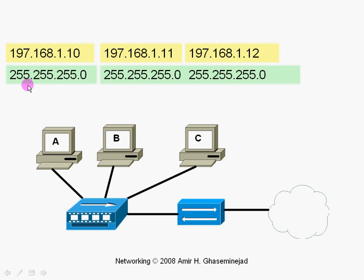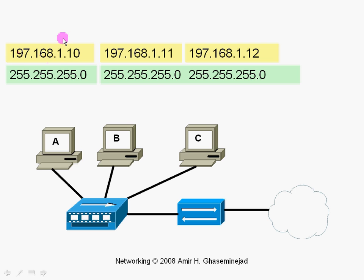The subnet mask is a set of zeros and ones that tells the computer which part of the IP address assigned to it is the network address and which part is the host address. Computer A, looking at the subnet mask assigned to it, will know that because there are 255, 255, 255 in the first three octets, the first three numbers in its IP address are the network ID, and the last one — corresponding to zero — is its host ID.